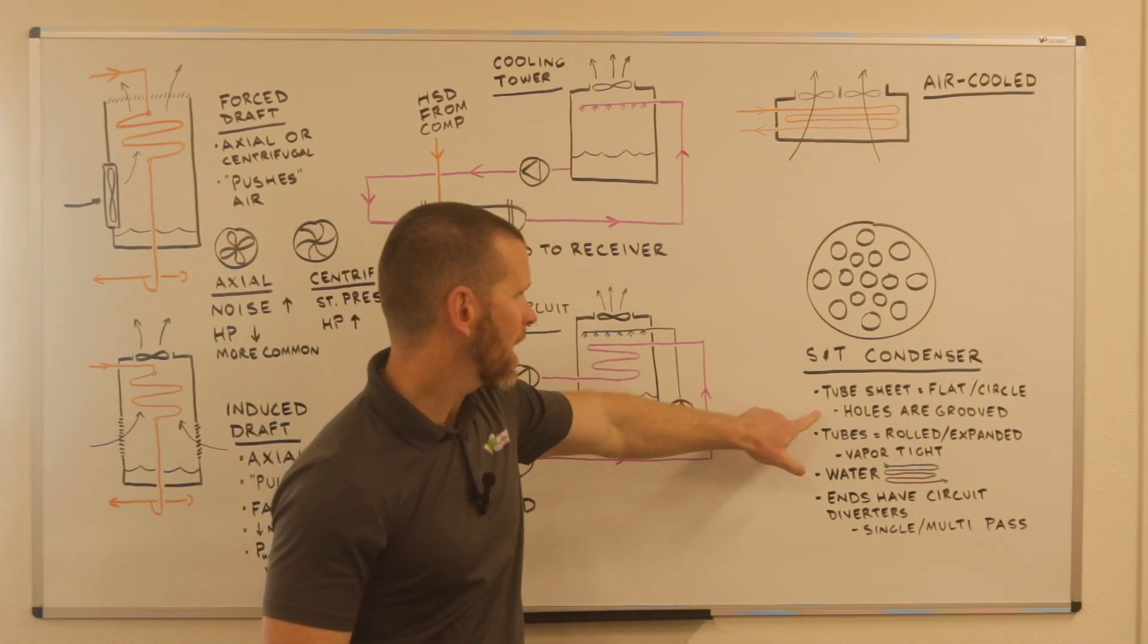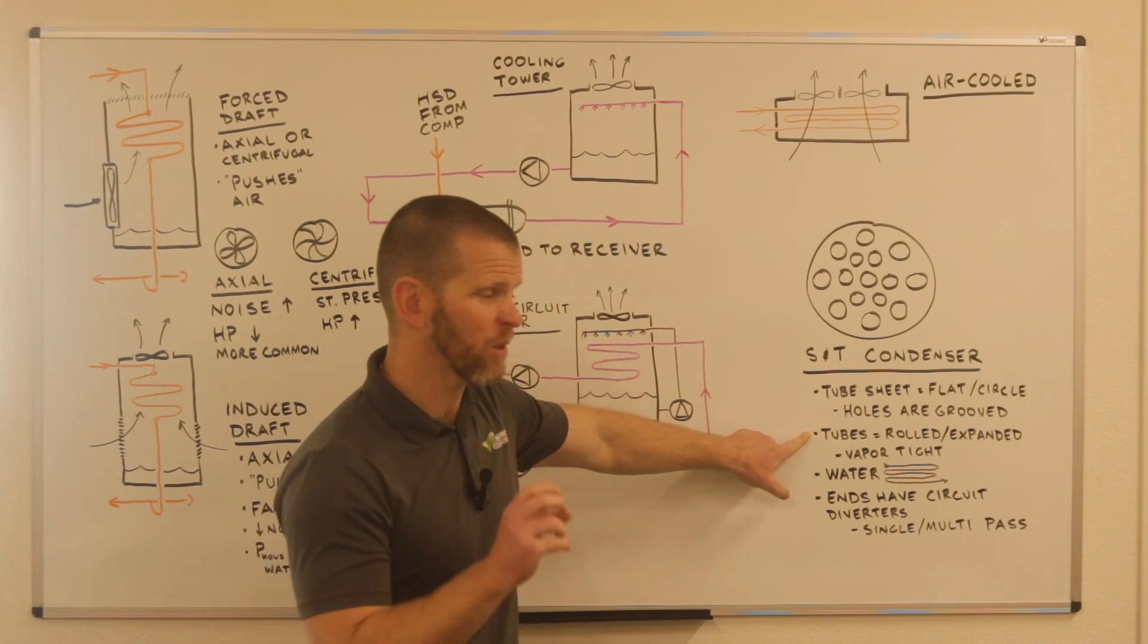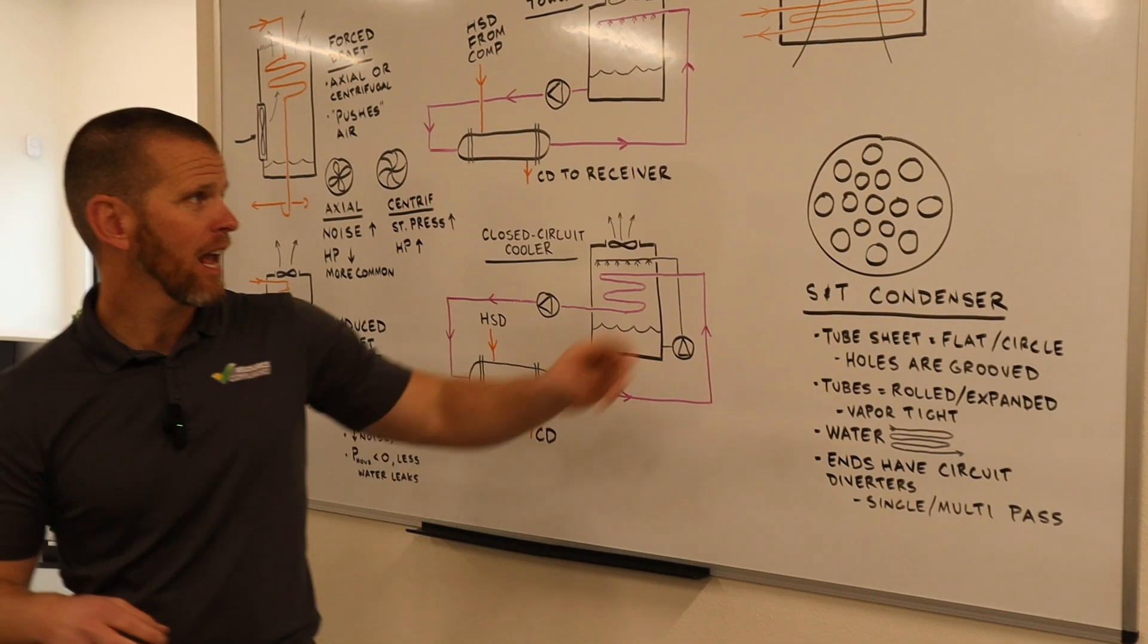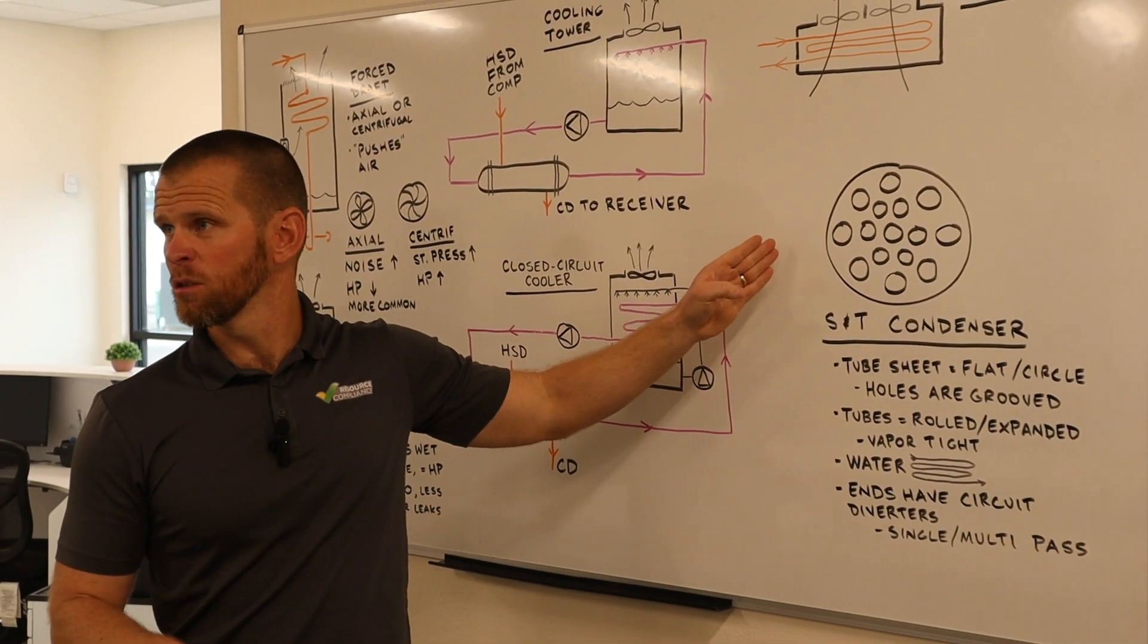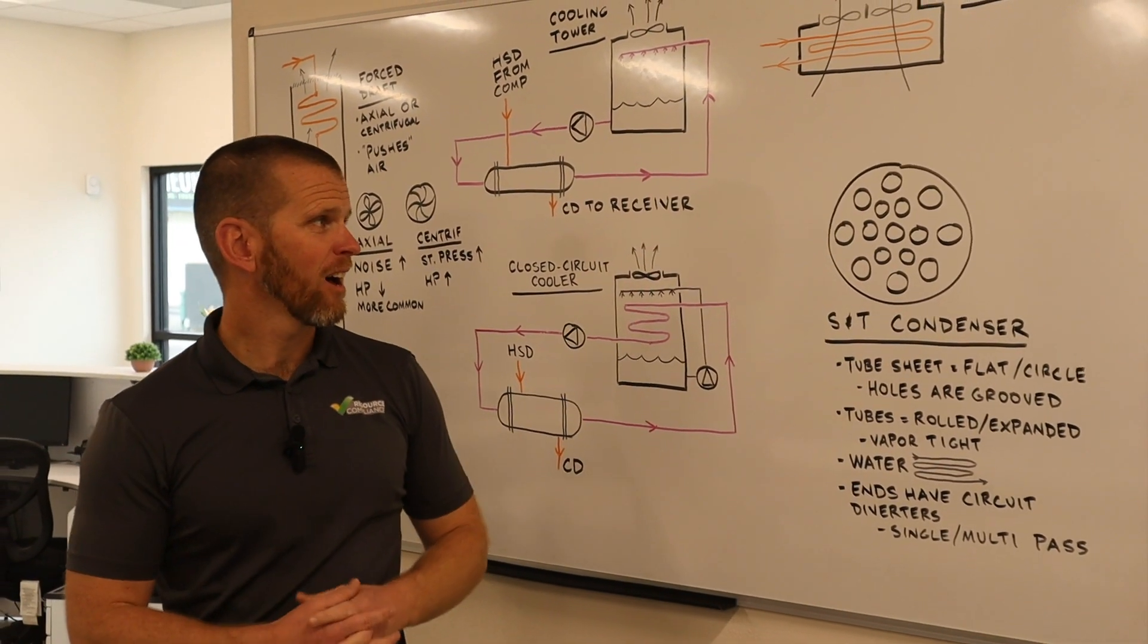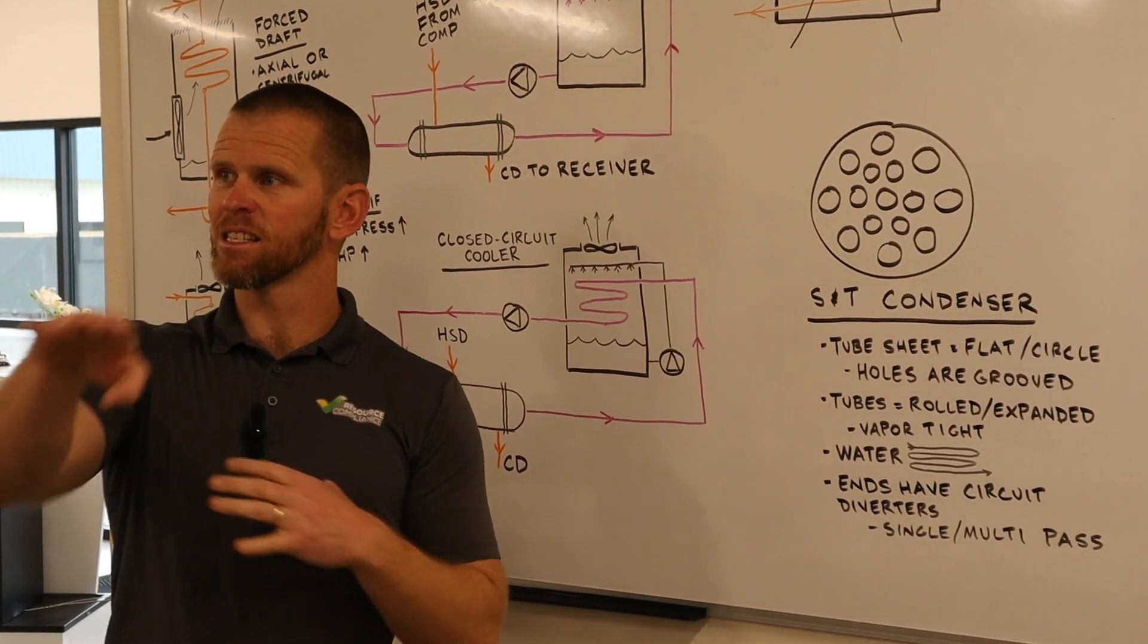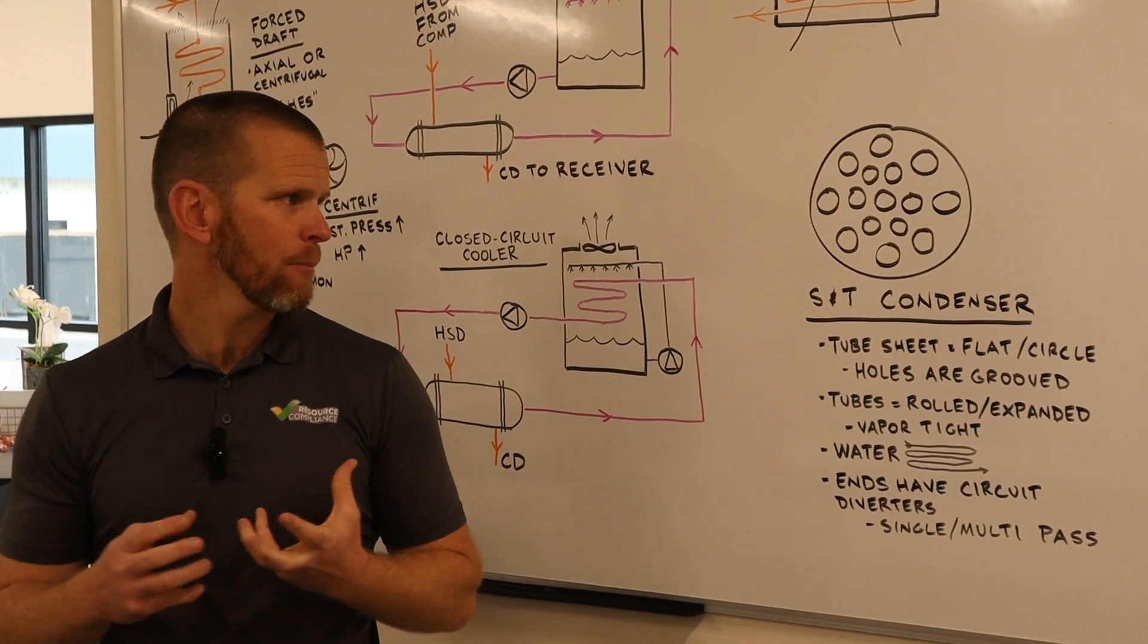The tube sheet's flat and the holes are grooved because then when the tubes are rolled and expanded, it creates a vapor tight seal. There'll be at least two tube sheets, one on each end that the tubes, the bundle of tubes sometimes it's called, fits into and secures them.